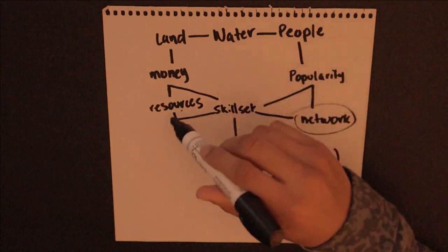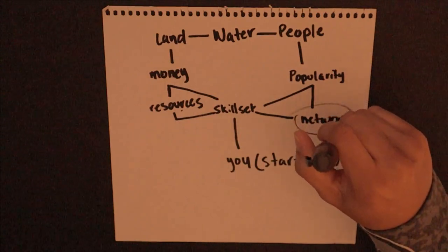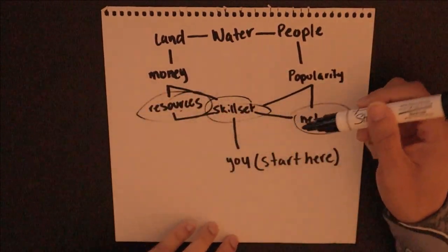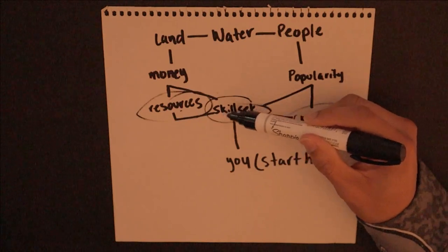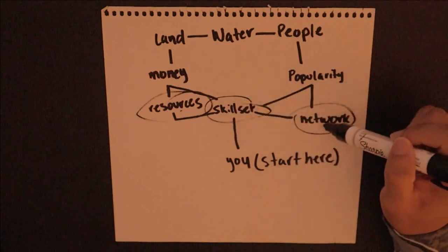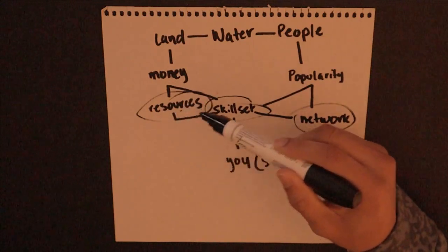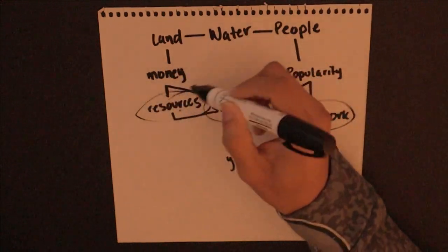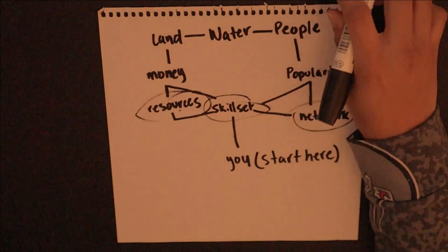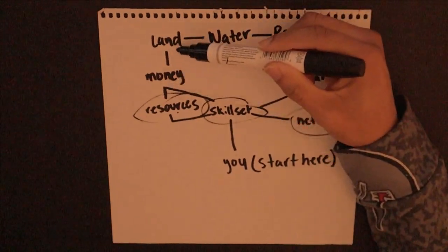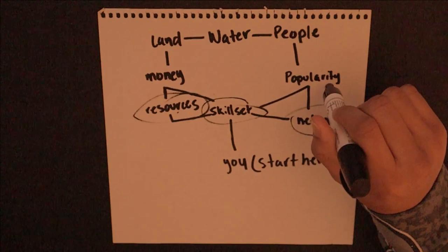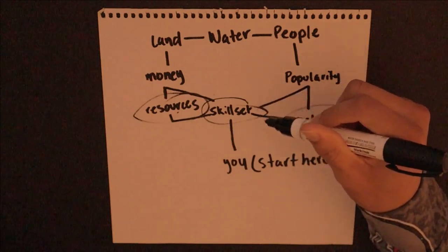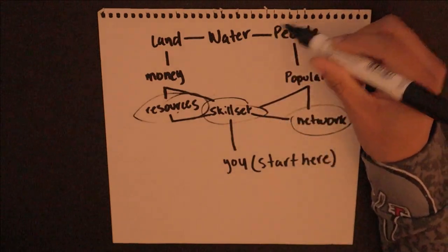It's all pretty simple — land creates water, and people create water because you have people to create irrigation systems for your land to have clean water from a clean water source. That's going to require a lot of people and a lot of money. So there you have it, folks. Just always remember: resources, skill set, and network will always be the base of how you create anything in your life. Always think about how you can bring the bigger goal, the overall vision, down into those three things and build from that — and pretty much you won't have any problems.